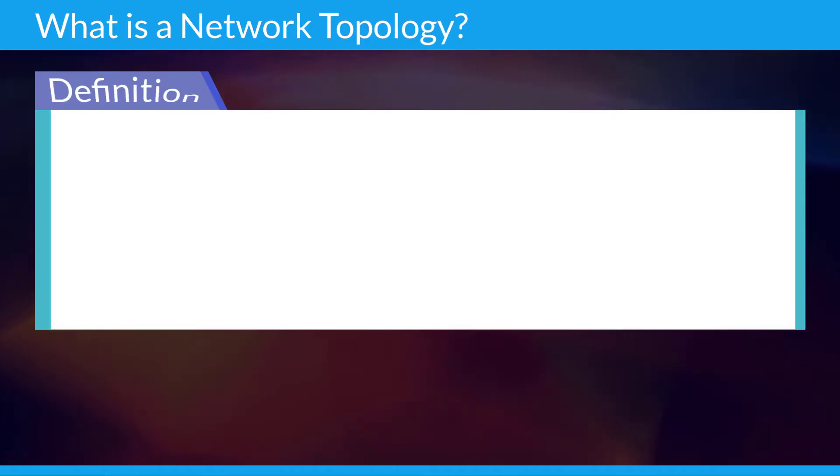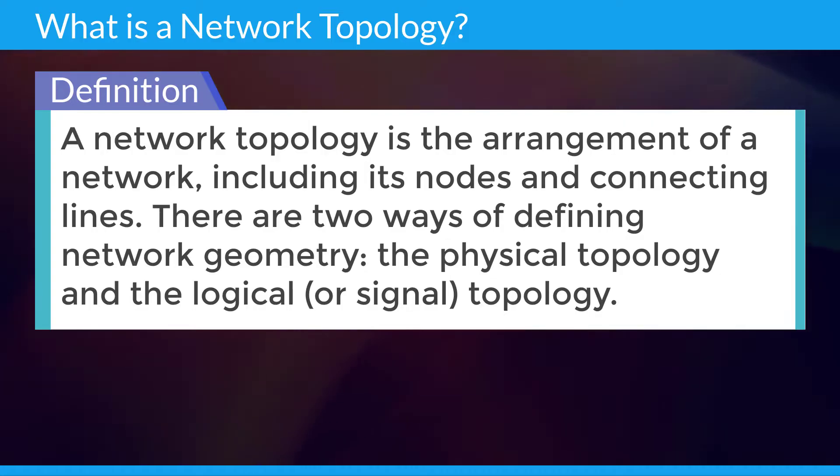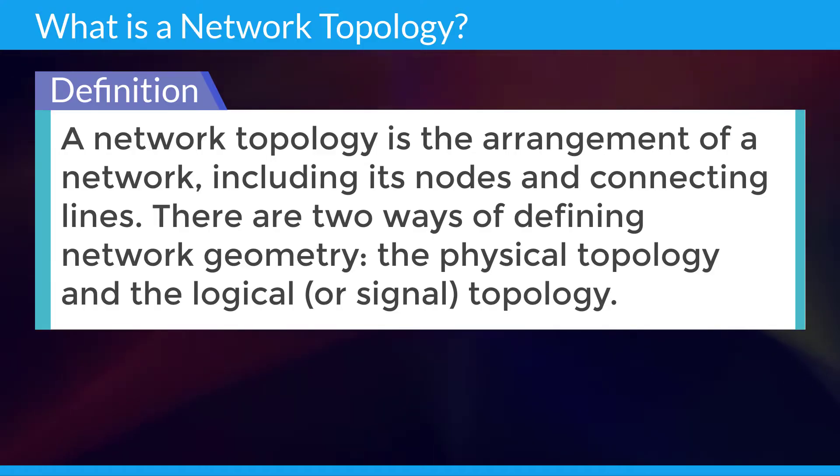A network topology is an arrangement of a network including its nodes and connecting lines. There are two ways of defining network geometry: the physical topology and the logical or signal topology.